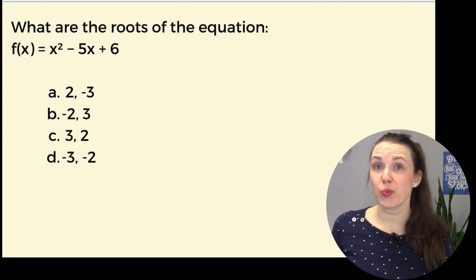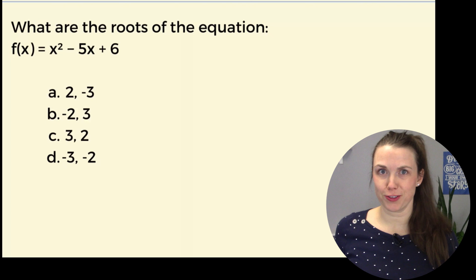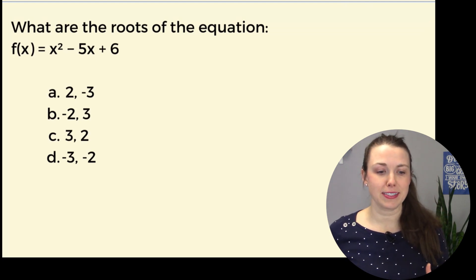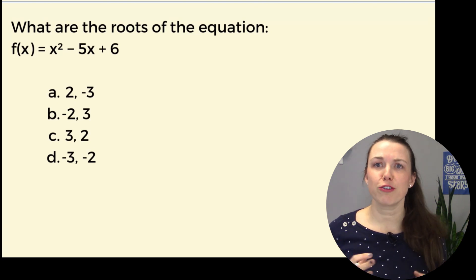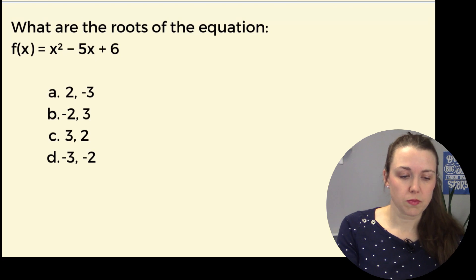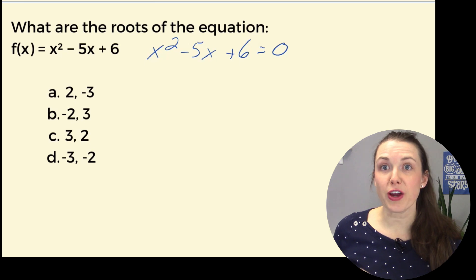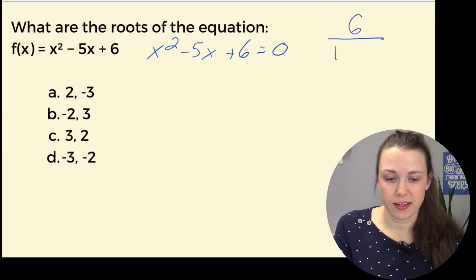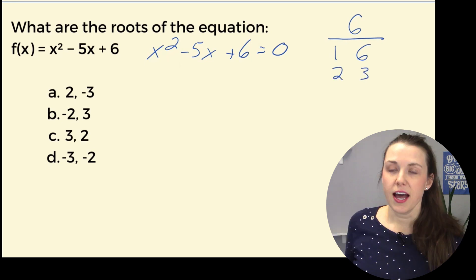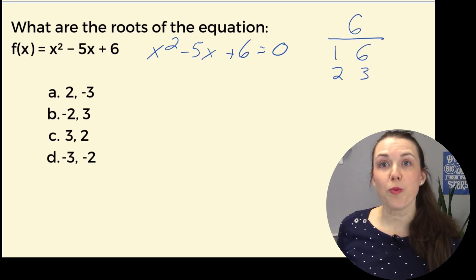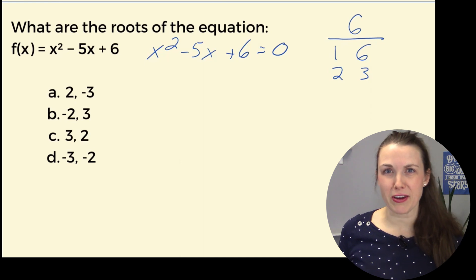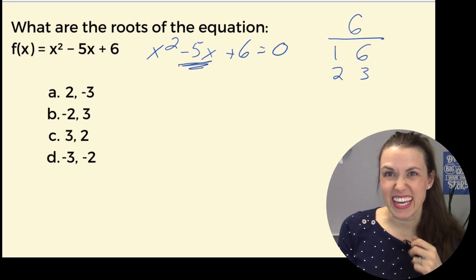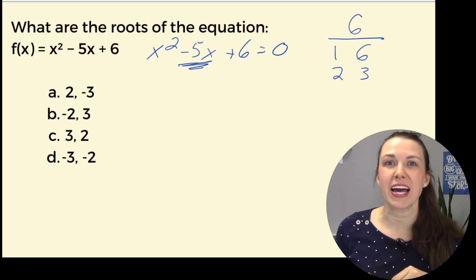Next problem: what are the roots of the equation? I worded it just a little bit differently, but we're still looking for the same thing — what is x when it's equal to zero? So it's the same thing. The factors of 6 are: 1 × 6 and 2 × 3. Notice how it says positive 6, so I know both of my numbers either have to be positive or both have to be negative. But if I look at that negative 5x, that's a negative number, so that tells me both of my numbers have to be negative.